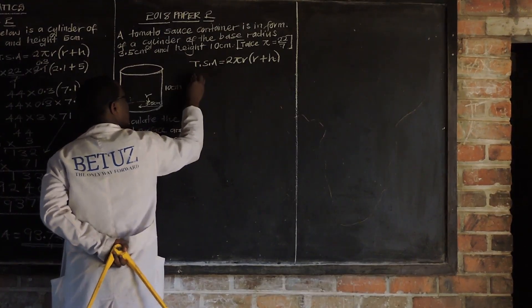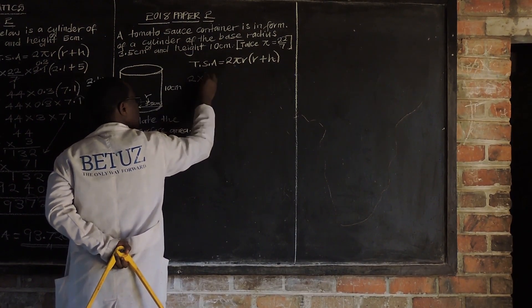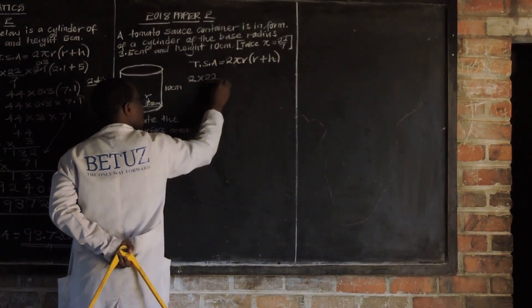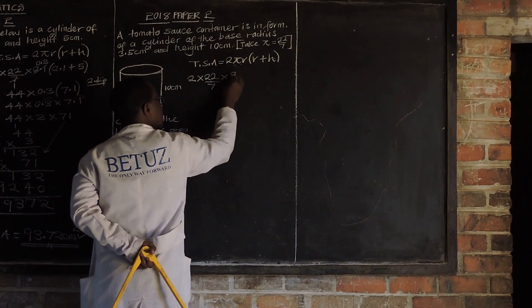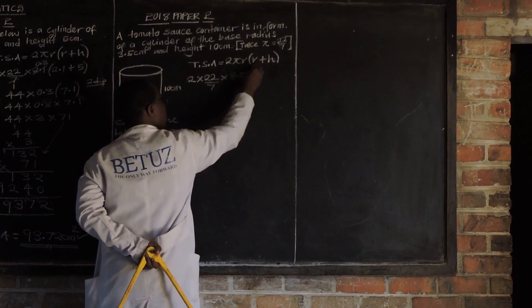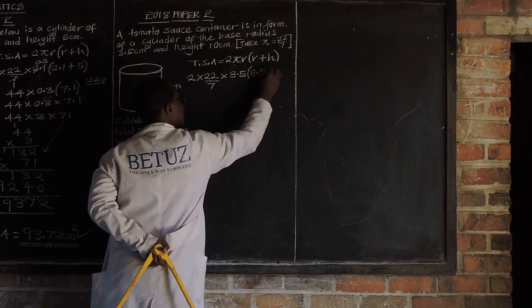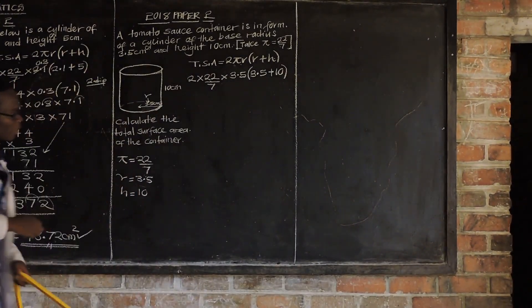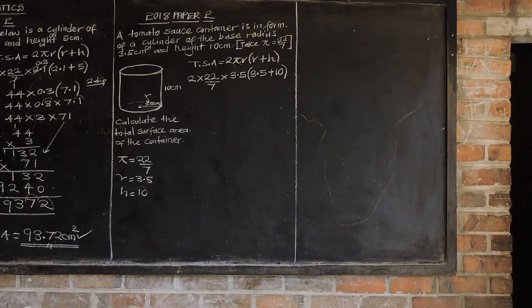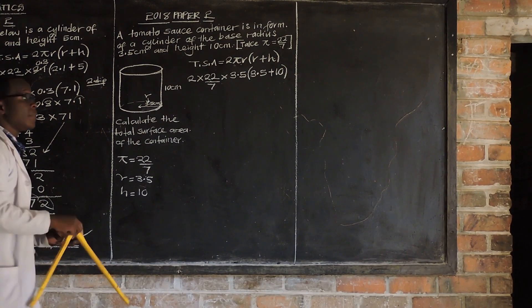So it will be 2 multiplied by 22 over 7, multiplied by 3.5, open the bracket: 3.5 plus 10. We can now try to reduce, because we are not allowed to leave the fractions. So let us divide: 3.5 into 7 goes 2 times, so 3.5 over 3.5 is 1, and 7 over 3.5 is 2. Then 2 into 2 is 1.